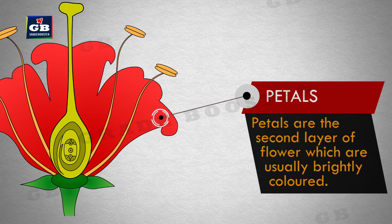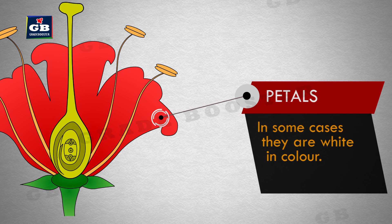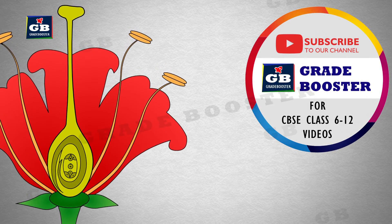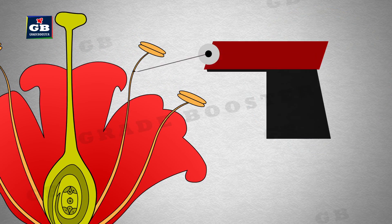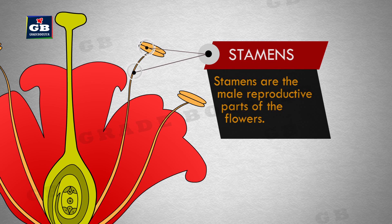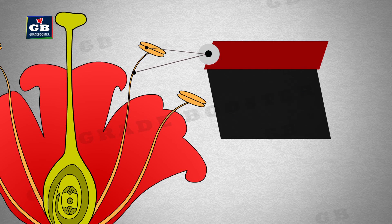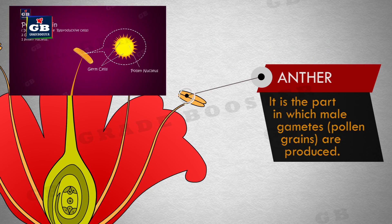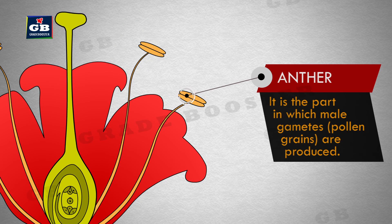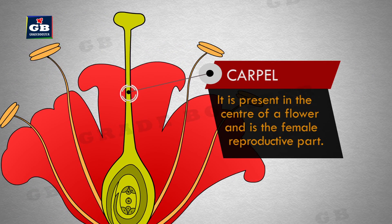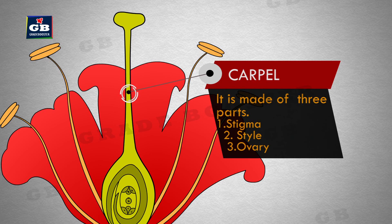Petals. This is carpel. The carpel is present in the center of a flower and is the female reproductive part. It is made up of three parts.